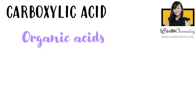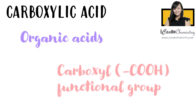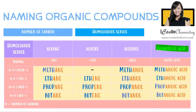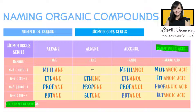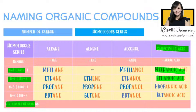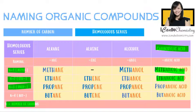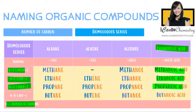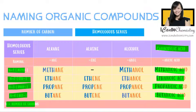Carboxylic acids are organic acids with a carboxyl functional group. The first member of the carboxylic homologous series has one carbon — it is called methanoic acid. The second member has two carbons; we call it ethanoic acid. The third member has three carbons and it is called propanoic acid. The fourth has four carbons and it is called butanoic acid.